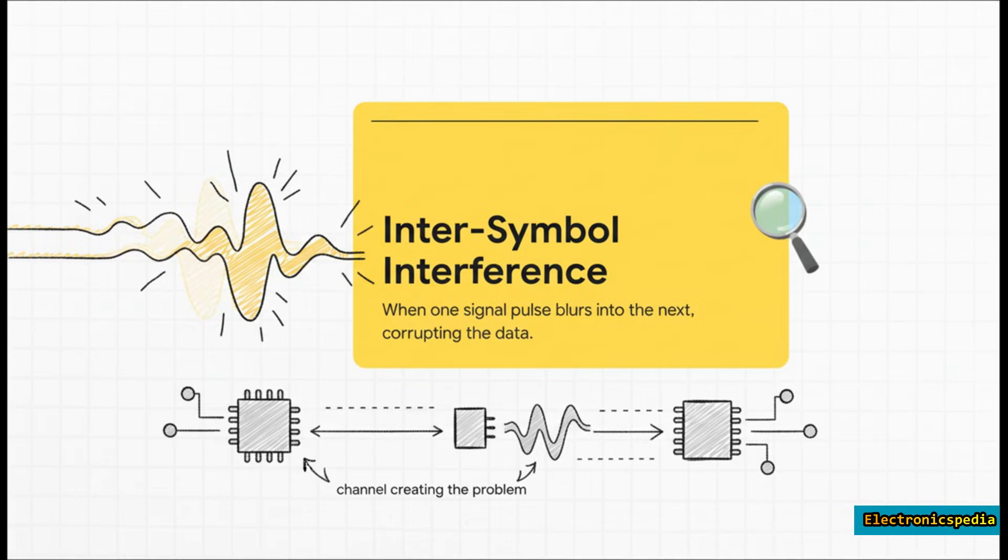This distortion has a technical name: inter-symbol interference, or ISI. It's when the echo of a previous bit bleeds into the current bit, which corrupts the data. It's like the end of one word blurring into the start of the next one. The channel itself—the wire, the connectors, the circuit board—that's what's creating the problem.